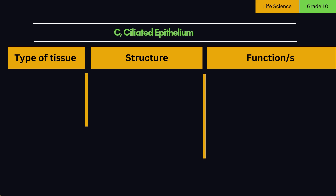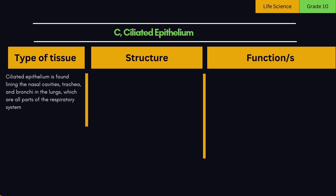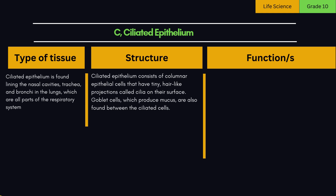C. Ciliated epithelium is found lining the nasal cavities, trachea, and bronchi in the lungs, which are all parts of the respiratory system. Ciliated epithelium consists of columnar epithelial cells that have tiny, hair-like projections called cilia on their surface. Goblet cells, which produce mucus, are also found between the ciliated cells.